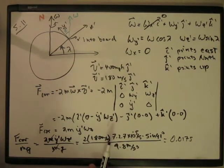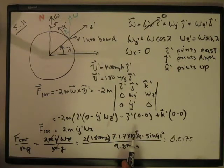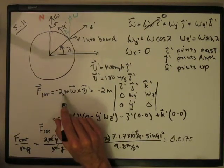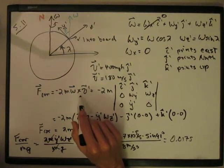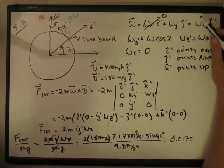And so we want to calculate the Coriolis force, which is minus 2m omega cross v prime, right? And so we have to get these guys in the same coordinate system.